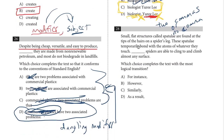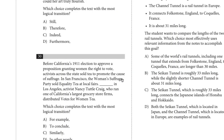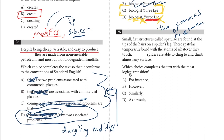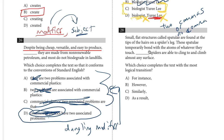Number twenty-eight, a transition word question: small flat structures called spatulae are found at the tips of hairs on a spider's leg. These spatulae temporarily bond with the atoms of whatever they touch — spiders are able to cling to and climb almost every surface. As a result of these bonds, they can cling to things. The answer is 'as a result.'